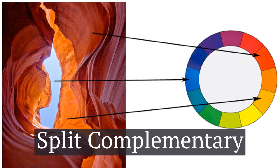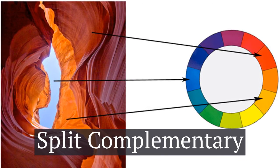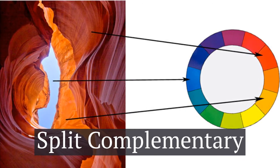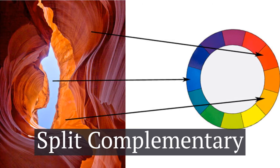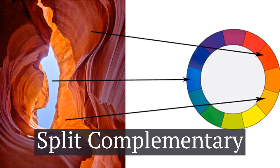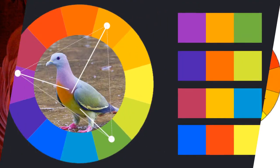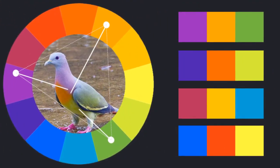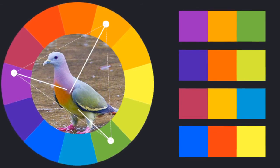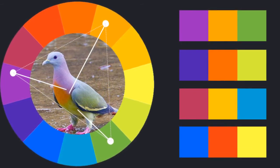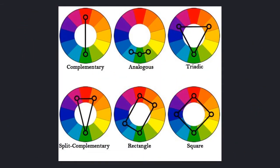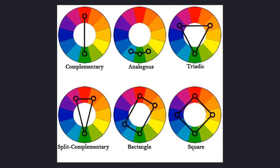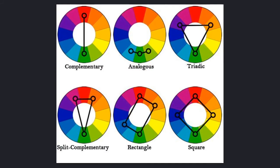Split complementary colors use a base color and two colors adjacent to the base color's complementary color. We can use colors in other ways too, such as this triad, or as in these examples.